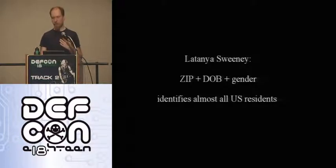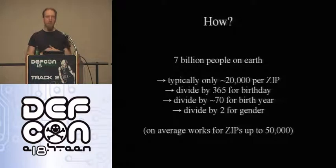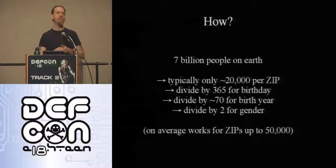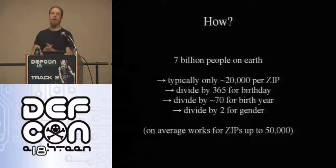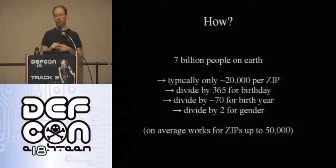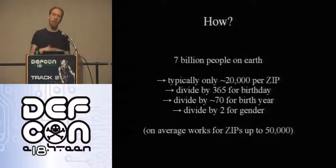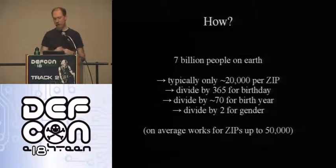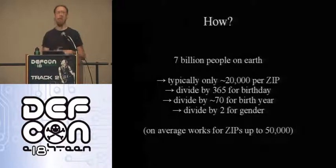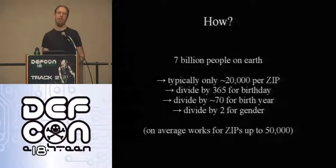That's a bit surprising and counterintuitive, so let's see how it happens. If you start with 7 billion people, you rapidly narrow down to about 20,000 to 50,000 people if you know a zip code. Then you divide by 365 for the birth date, divide by about 70 because you know their age, then divide in half because you know their gender. If the zip code had fewer than about 50,000 people, you probably have a unique person.